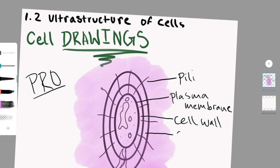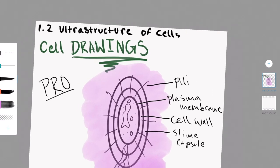Now we are going to go through how to draw the different types of cells, specifically a prokaryotic cell, eukaryotic cell, and a plant cell. I'm going to start with prokaryotic, since this is the most simple.